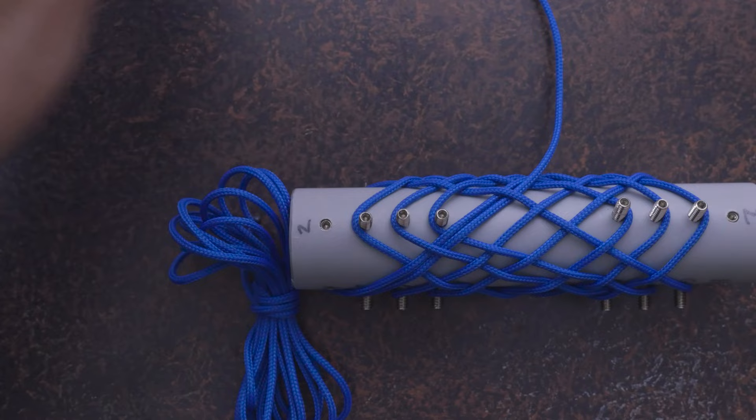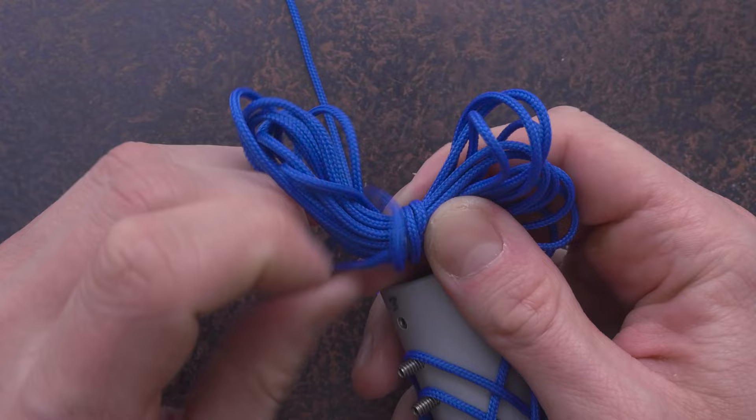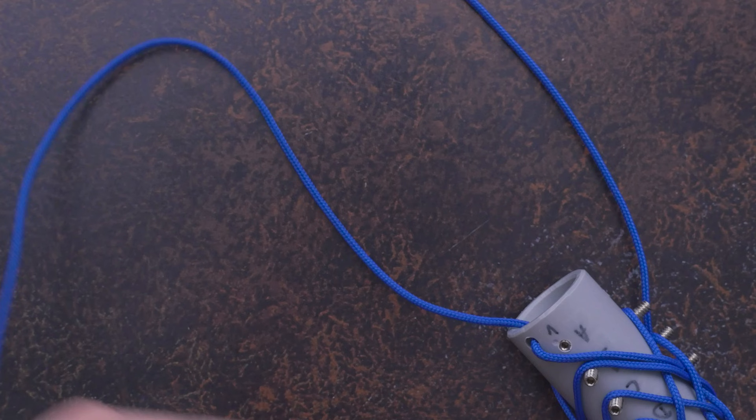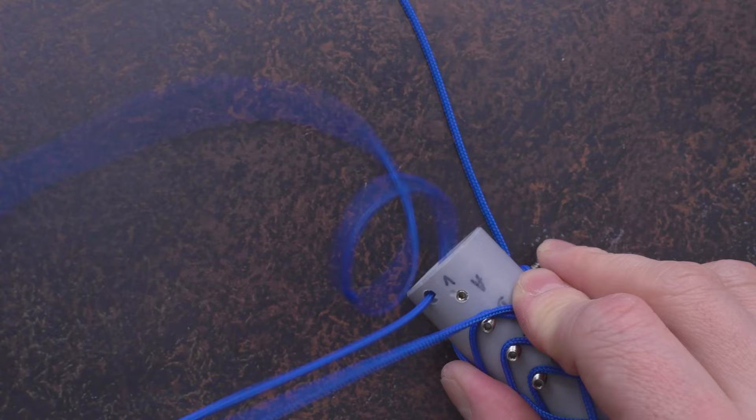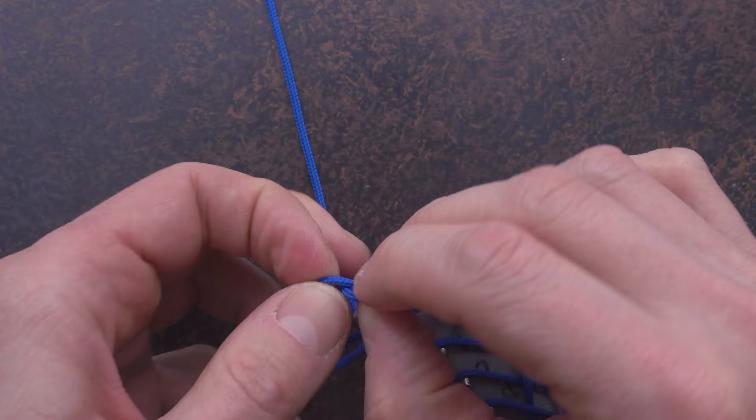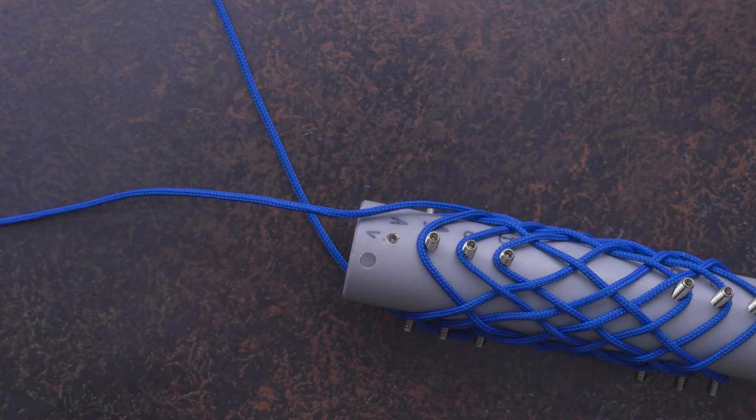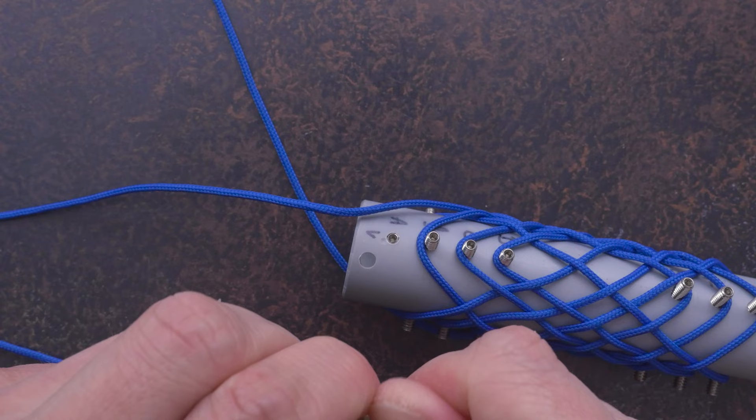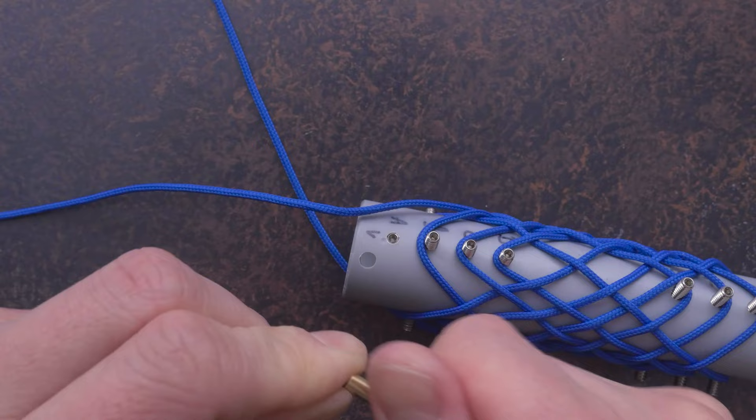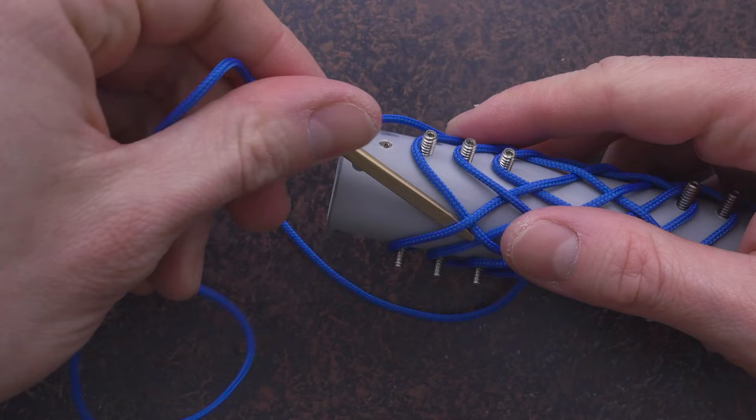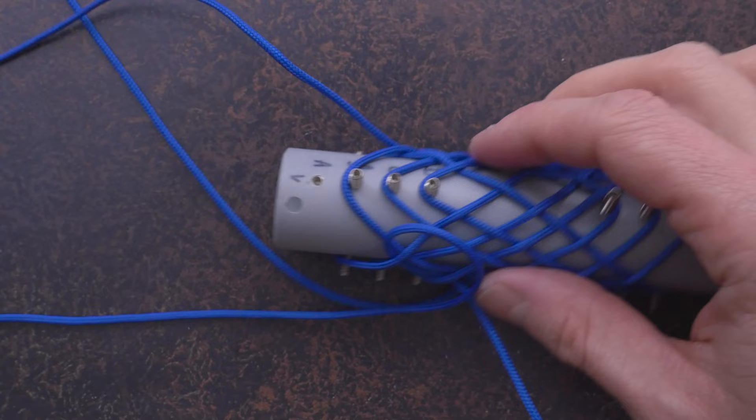At this point, we're going to switch from our working end to the standing end, so undo the coil, pull it through. Reattach the lacing needle onto this standing long end, and double up the knot. So we double up our knot by simply following the working end through the knot, until we reach our working end.